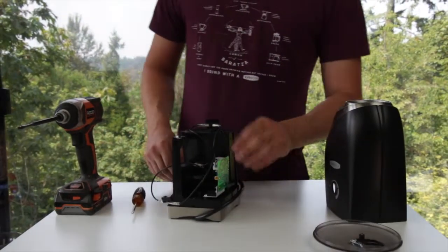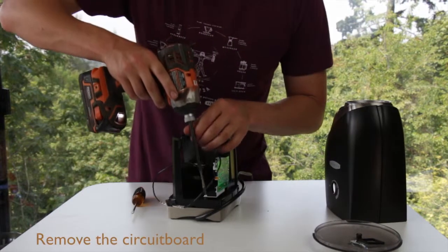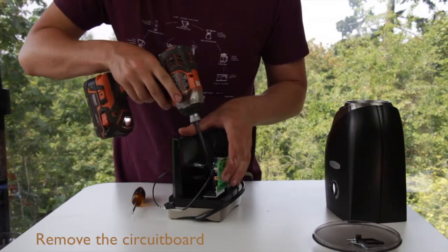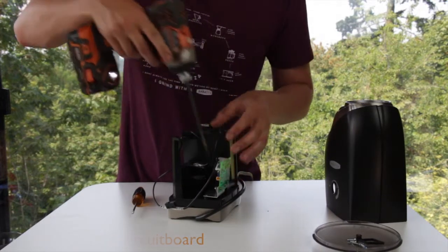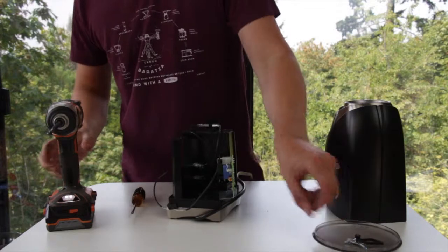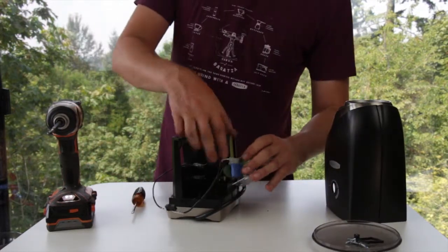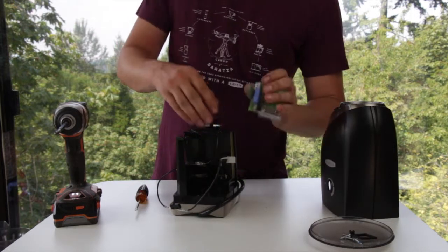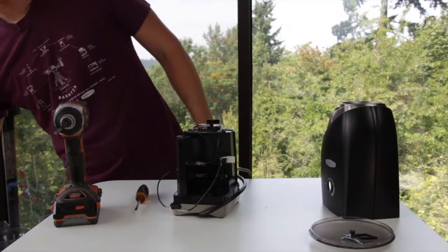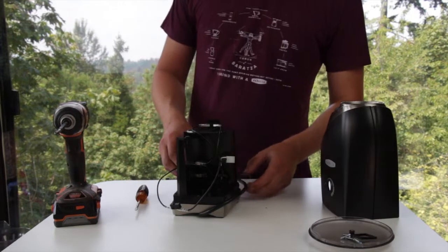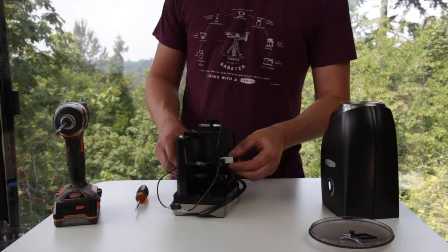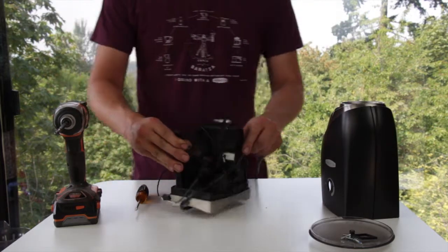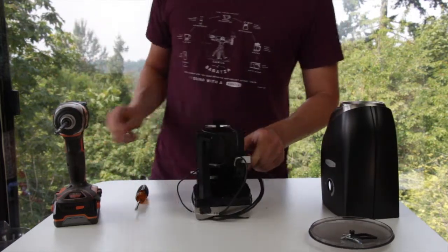The next easiest thing to take off is going to be the circuit board. There are two Phillips screws, easy to see and get to, that are holding it in. Once these two screws are removed, we can unplug the connector from the circuit board and set the circuit board to the side. If you have an older grinder, you may have a slightly different style of circuit board connector. Just pay attention to how it's connected and put it back together the same way it was when you took it apart.